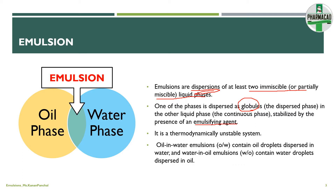The dispersed phase present in the continuous phase is stabilized by the presence of emulsifying agents, also known as emulsifiers. Conventionally the immiscible liquids are oil and water — one liquid is non-polar such as an oil or lipid in a liquid state, and the other one is polar, that is water or an aqueous solution containing some buffer. For simplicity, the terms we use are oil phase